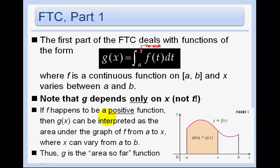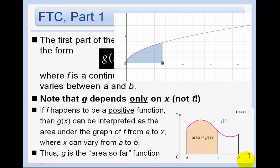If f happens to be a positive function, then g of x can be interpreted as the area under the graph of f from a to x, where x is between a and b. So g is the area-so-far function — I like to call it the accumulator function — because as x gets bigger, the area gets larger.